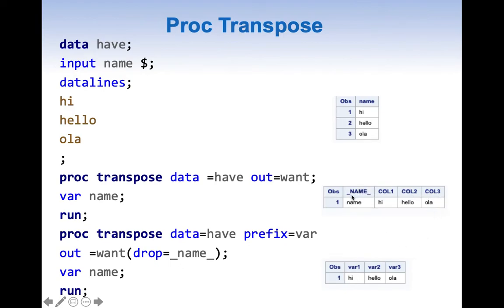If you don't want underscore name underscore, simply use drop equals underscore name underscore. Also, instead of col1, col2, col3, if you want a different prefix, mention prefix equals var. This changes the column names to var1, var2, var3. Whenever you mention prefix equals something, it takes that value and adds 1, 2, 3 instead of col1, col2, col3.